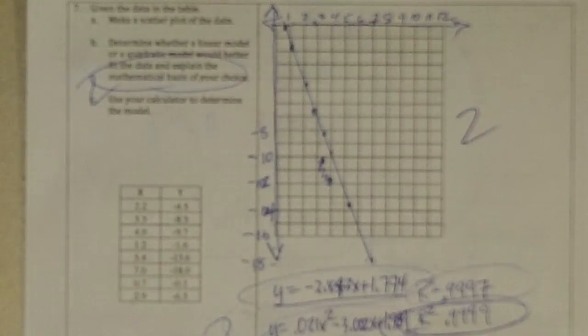This is 2, and make an argument for choosing linear or quadratic. If you argued using the R squared values, then you would have gotten bonus points. And that's it.